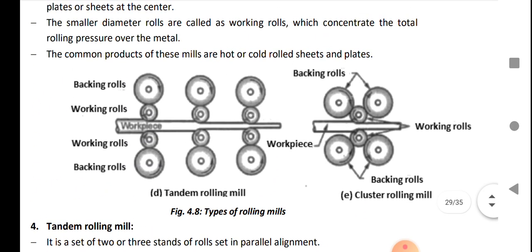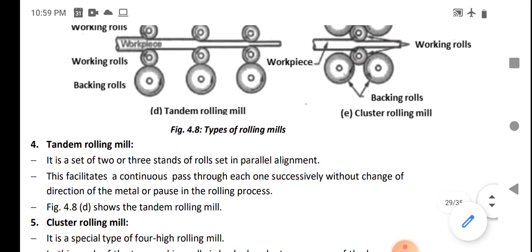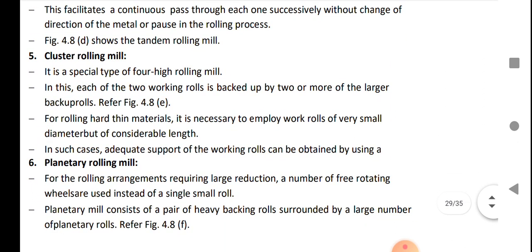Cluster rolling mill: As you see in this figure, we use two rollers with some backing rolls to support small rolls. It is a special type of four-high rolling mill. In this, each of two working rolls is backed up by two or more of the larger backup rolls. For rolling hard thin material, it is necessary to employ work rolls of very small diameter but of considerable length. In such cases, adequate support of the working rolls can be obtained by using these rollers.